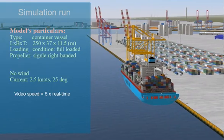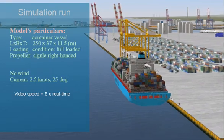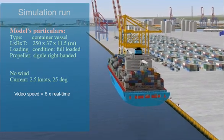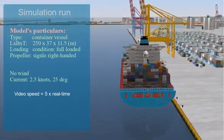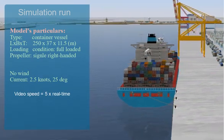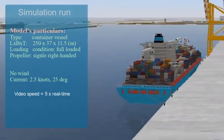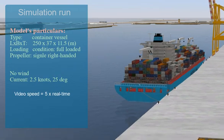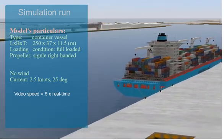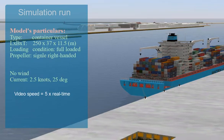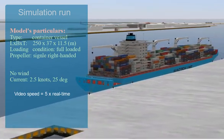In this scenario, the ship model is a container vessel. Her length is 250 meters, breadth is 37 meters, and the draft is 11.5 meters. The ship is fully loaded and fitted with a single right-handed propeller. The current speed is 2.5 knots with a direction of 25 degrees. There are no winds in this situation.